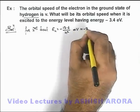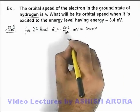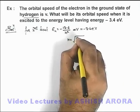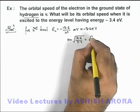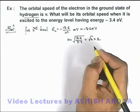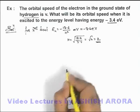If it is equated to minus 3.4 electron volts, on simplifying we can see n equals the square root of 13.6 divided by 3.4, that will be root 4, which is equal to 2. That means minus 3.4 electron volts is the energy of the second energy level.